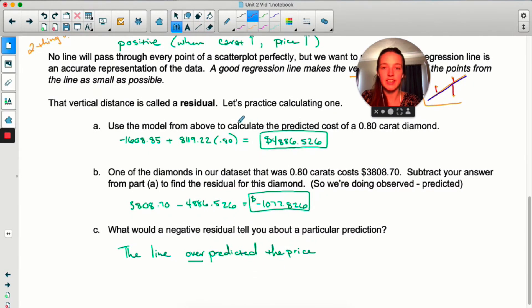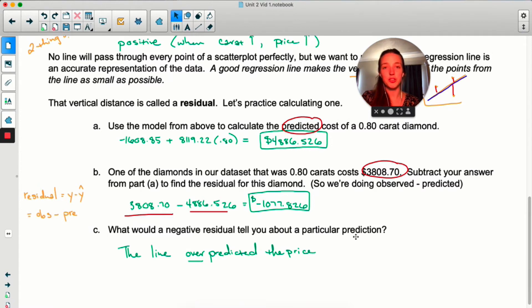So if we think about a scatter plot with a line, a regression line is our line that we're using to model the situation. And these vertical distances are basically telling us how good our line is at predicting. If these vertical distances are large, our line isn't very good at predicting. That vertical distance that I drew here in red is called a residual. So what you did in these parts here is you practice calculating one.